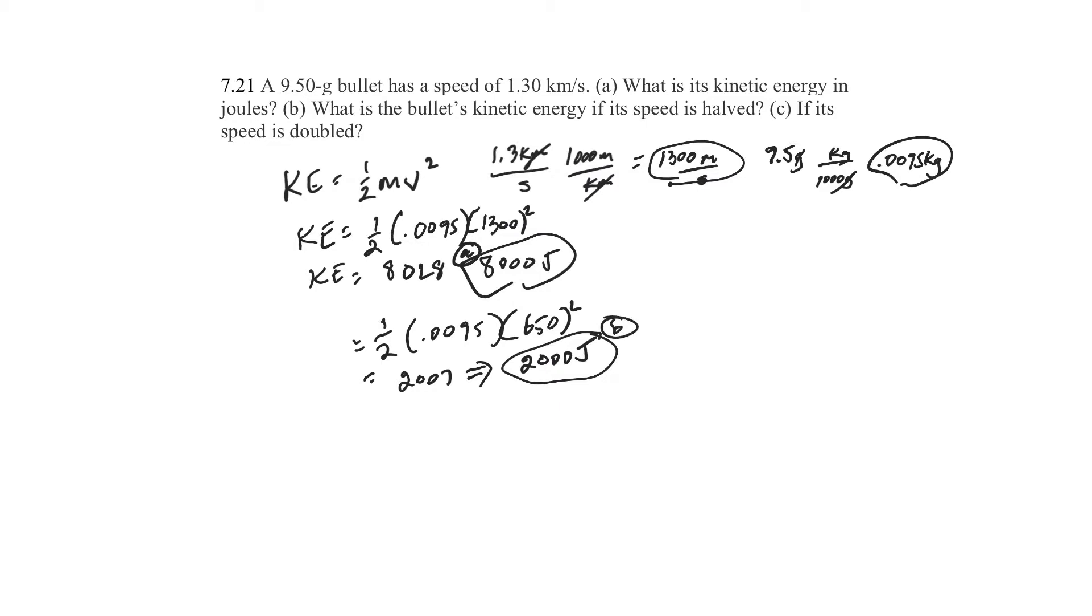Alright, so we went down by 4. So if I halve it, there's the square. Okay, I halve the velocity, then I divide by 2, but it's 2 squared. So I'm actually reducing it by 4. What's going to happen if you double it?